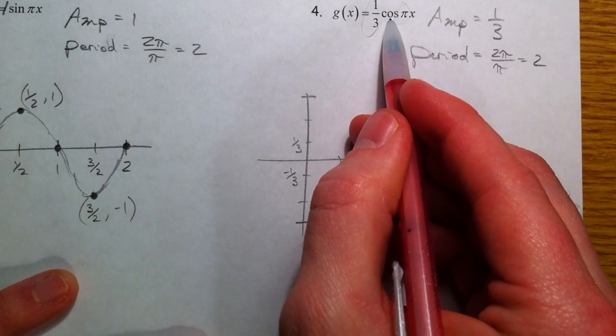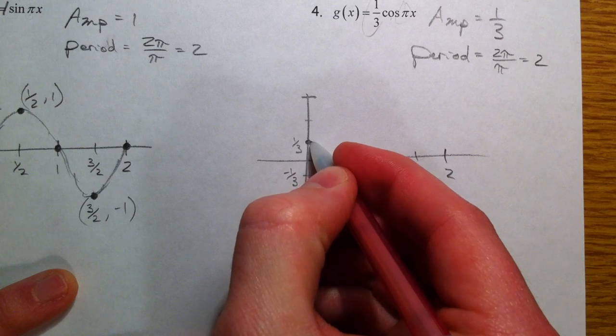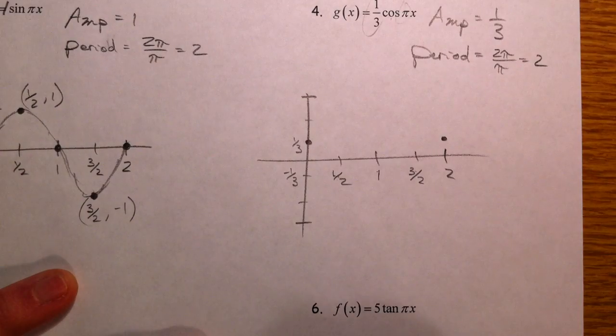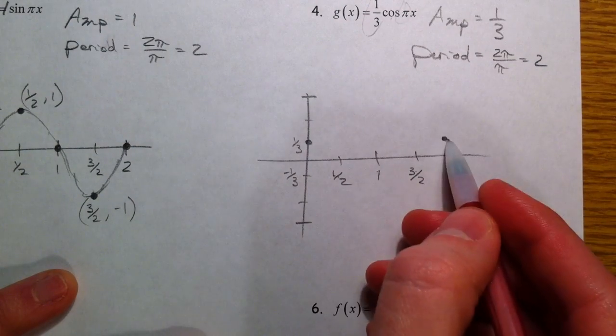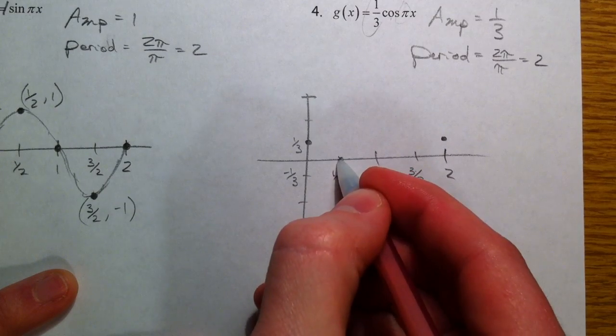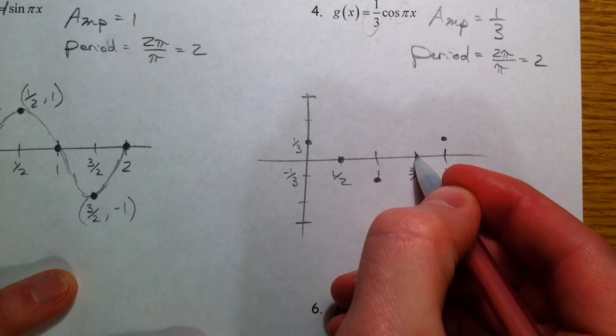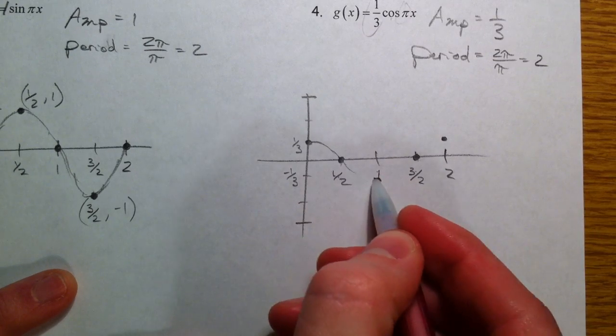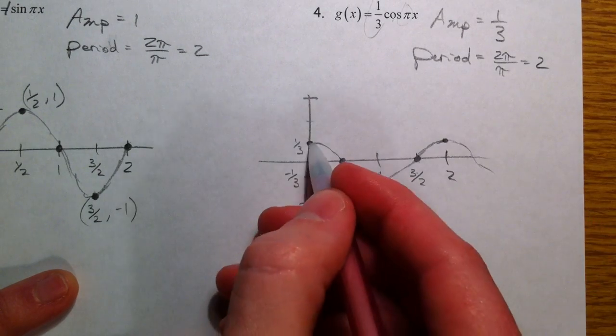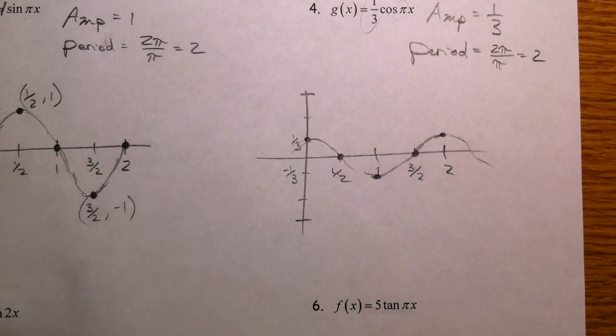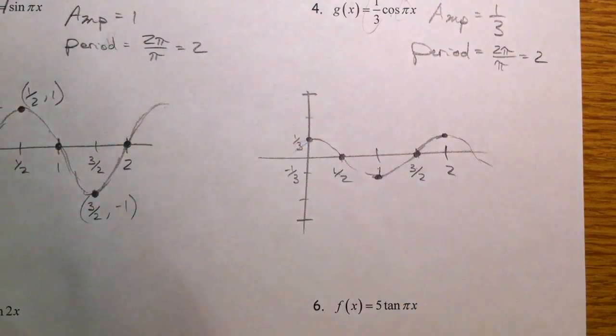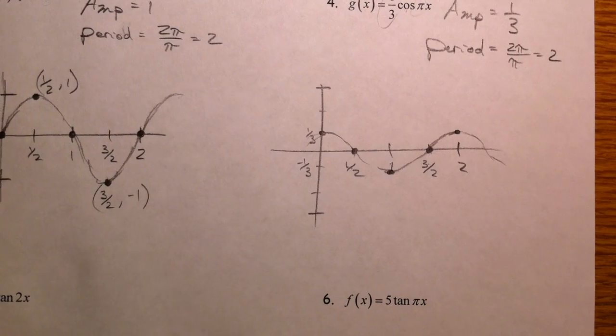Cosines start at the peak. And so I'm going to start at 1 third and get back to 1 third once I get to 2. Halfway in between there, it's going to be at its minimum. So right here. And halfway in between there, it's going to cross the x-axis. They're all very symmetrical. And we have those. Keep in mind that these continue to go on in both directions. We're just graphing one cycle of it. Same thing with this. Keeps going.